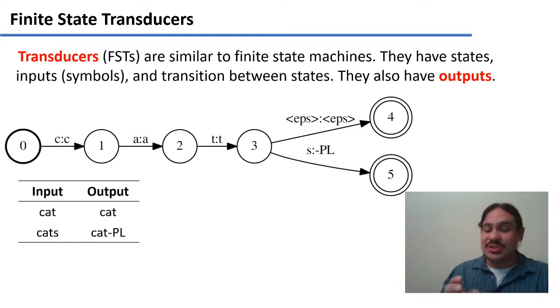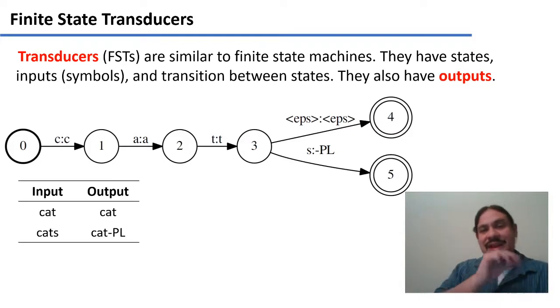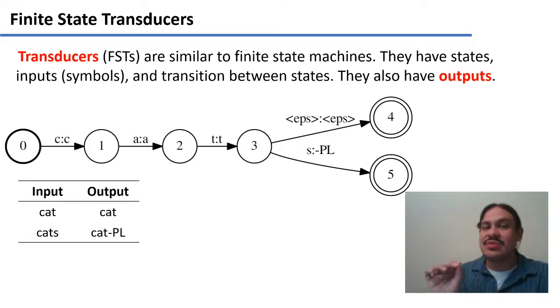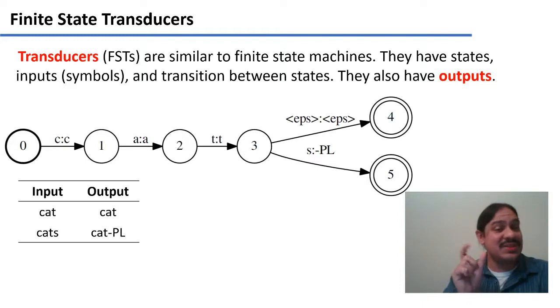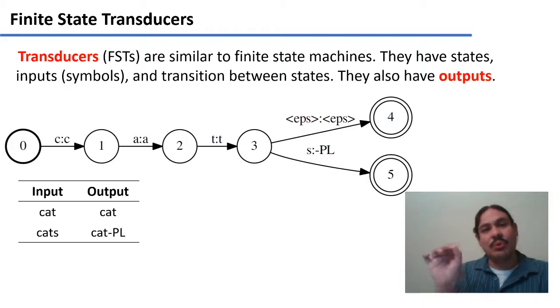The input is just a word in English, and the output is a linguistic description of the word — the root or stem "cat" plus a plural marker.